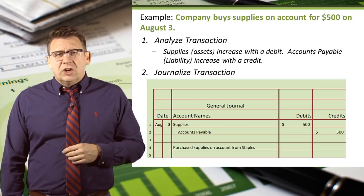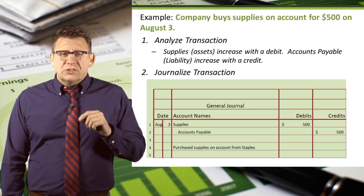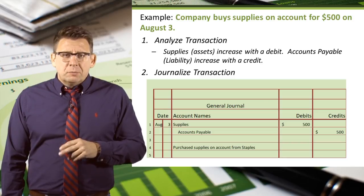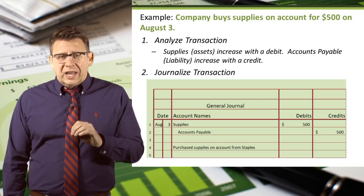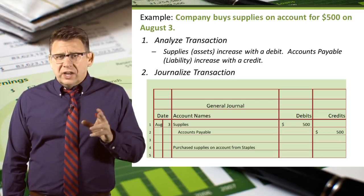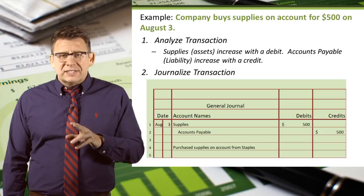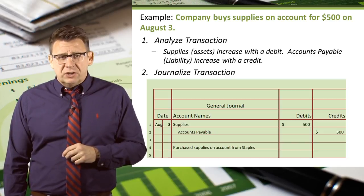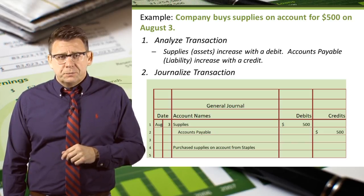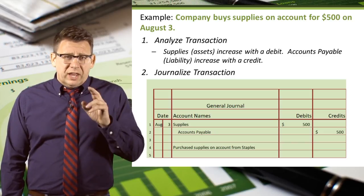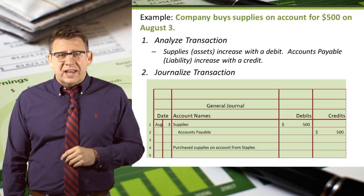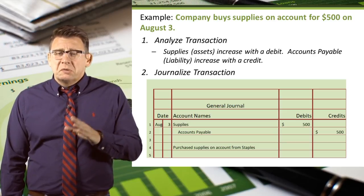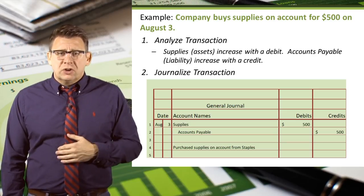We enter the description of the transaction at the bottom. Often in accounting homework you won't need to enter a description, but you should be aware that in real life journal entries always have at least this type of documentation. And now we're done — we've entered this transaction into the general journal by completing a journal entry.